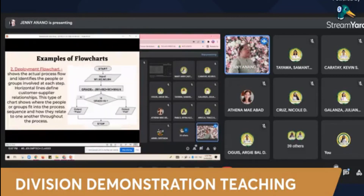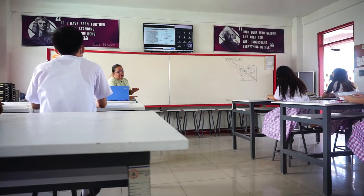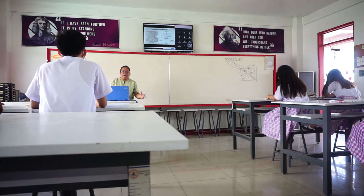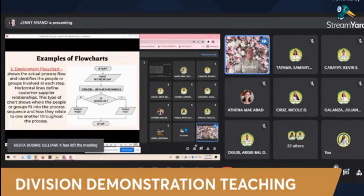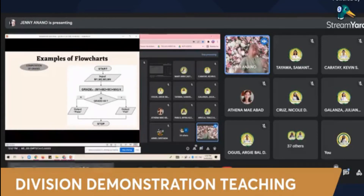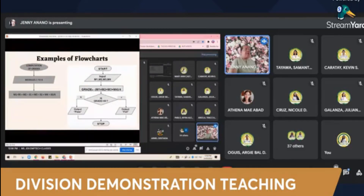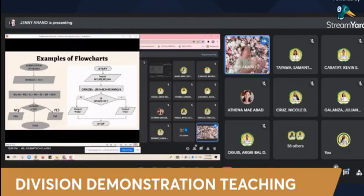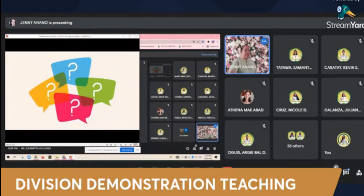Aside from linear, we have the deployment flowchart, which shows the actual flow and identifies the people or groups involved in different steps. For example, in the computation of grades: input your scores — Module 1: 90, Module 2: 91, Module 3: 92, Module 4: 93 — then add them and divide by 4, and the arrow line leads to your final grade. That concludes the two examples of flowcharts. Any questions?